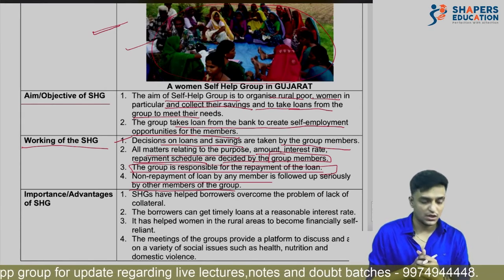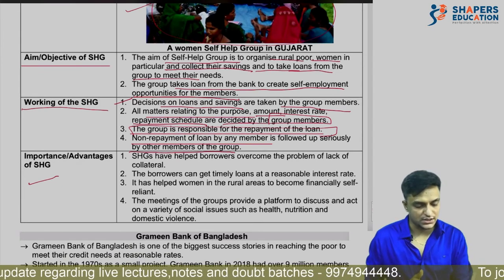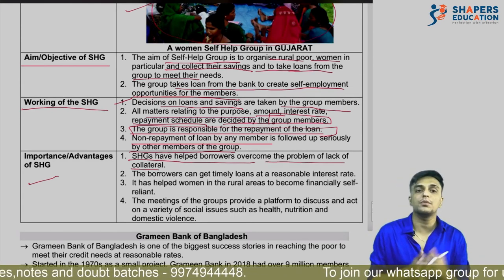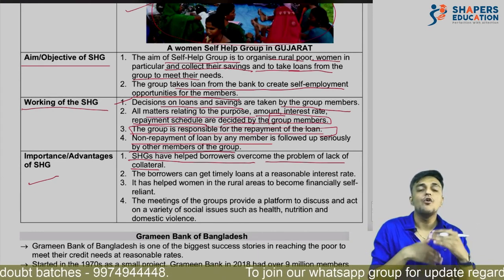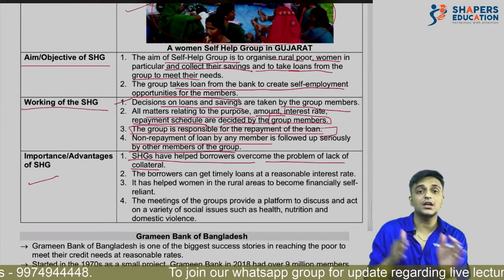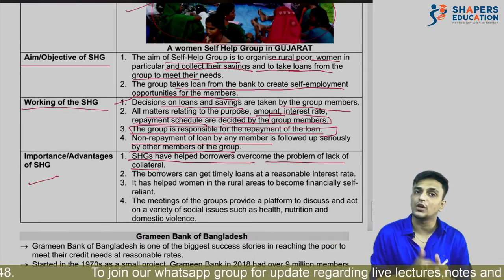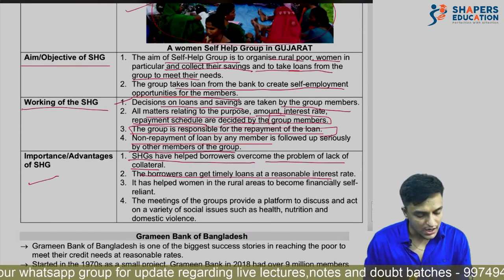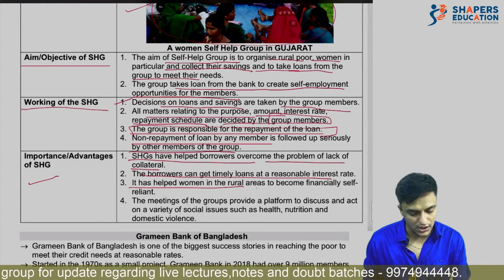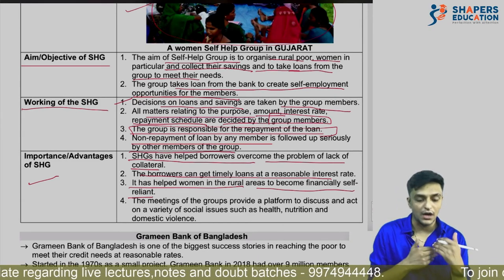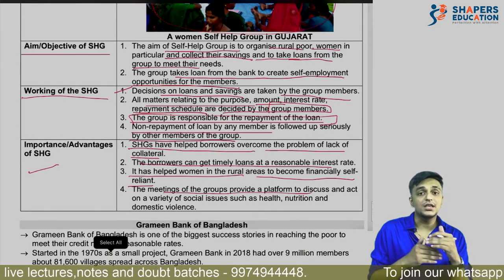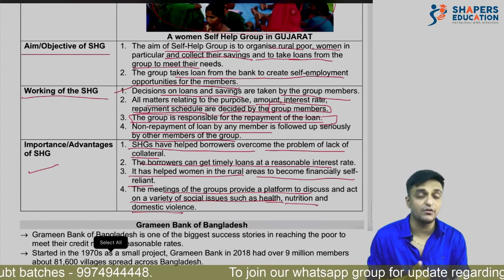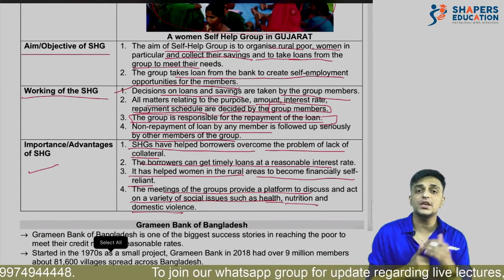Advantages of self-help groups: borrowers get help to overcome the problem of lack of collateral, since poor people don't have collateral. The SHG as a group provides a collateral guarantee — if one person cannot repay, the group guarantees repayment to the bank. Borrowers get loans from banks and cooperatives at timely and reasonable rates. It has specifically helped women in rural areas become financially self-reliant. Group meetings also serve as a platform to discuss social issues such as health, nutrition, and domestic violence.